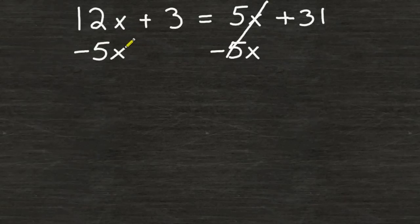12x take away 5x is 7x. And we still have plus 3 on the left hand side of our equation. And on the right hand side, we still have 31.